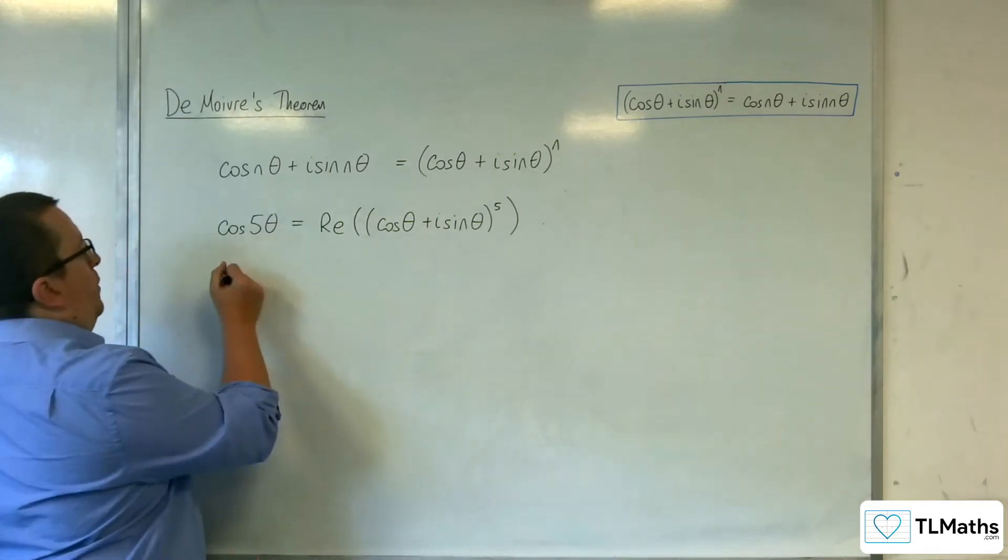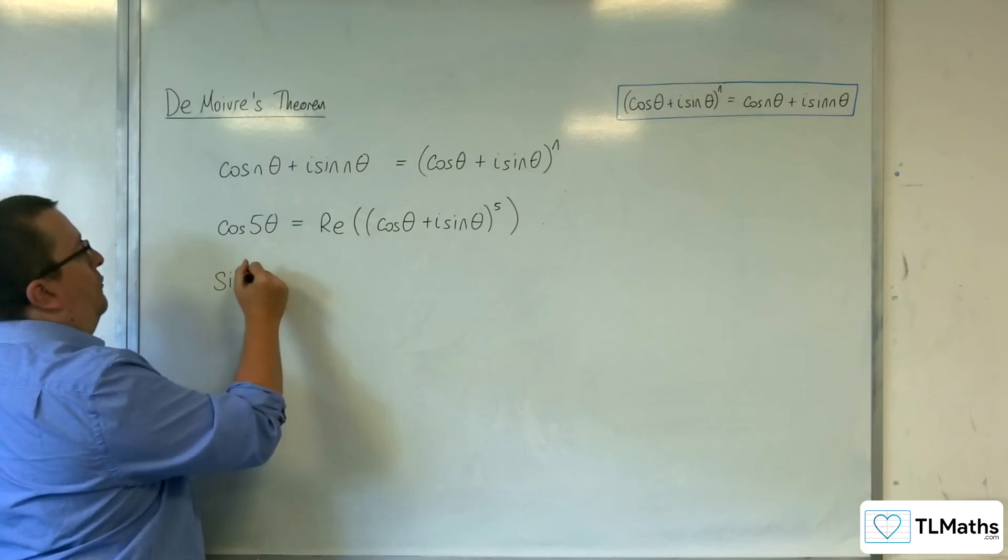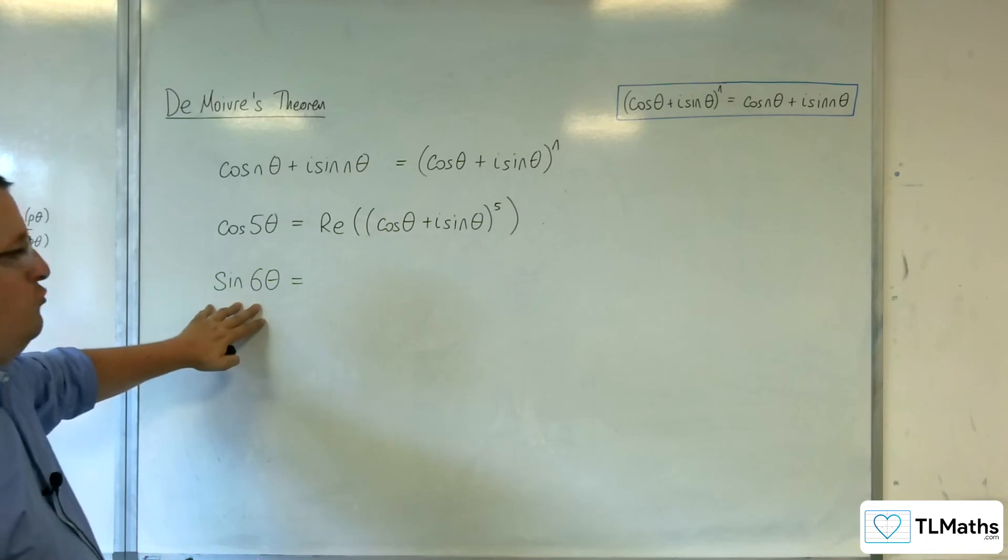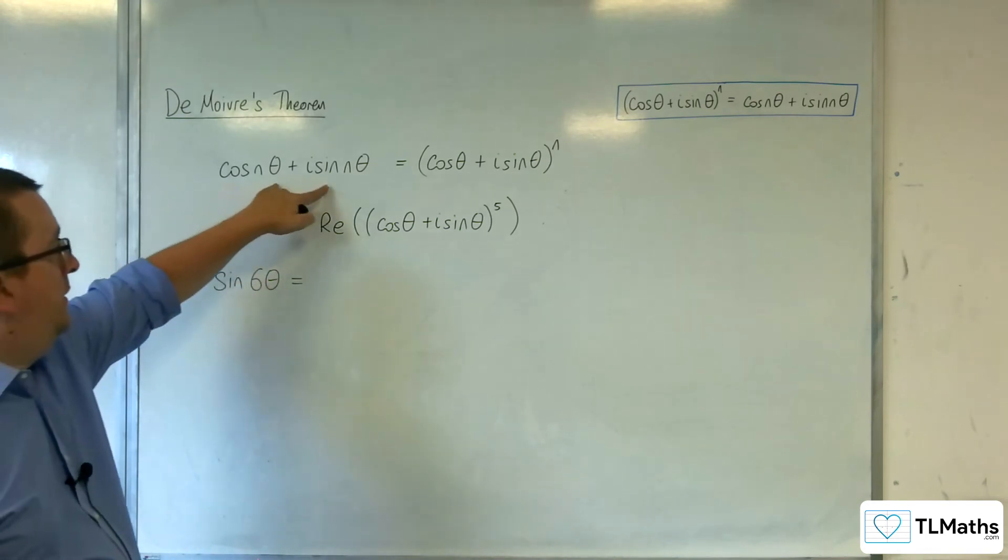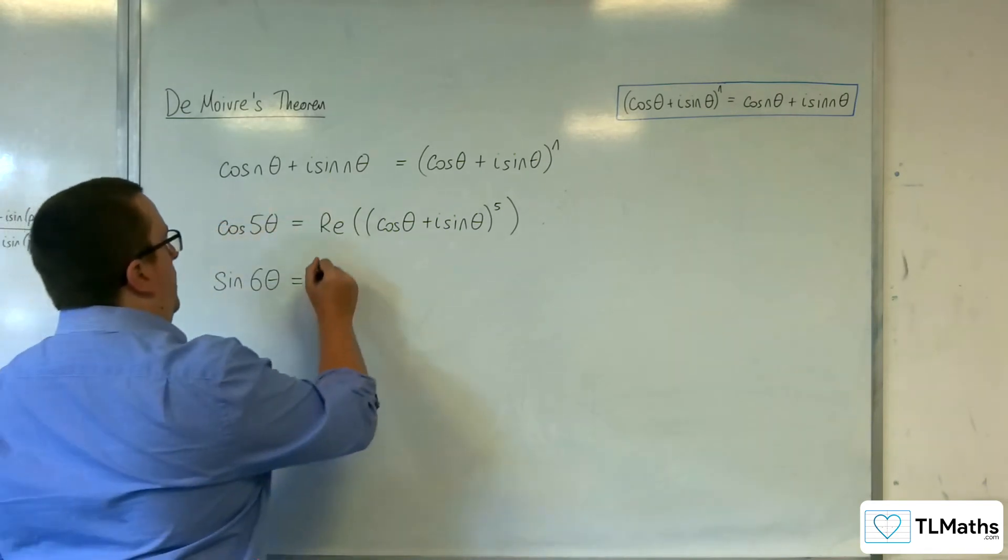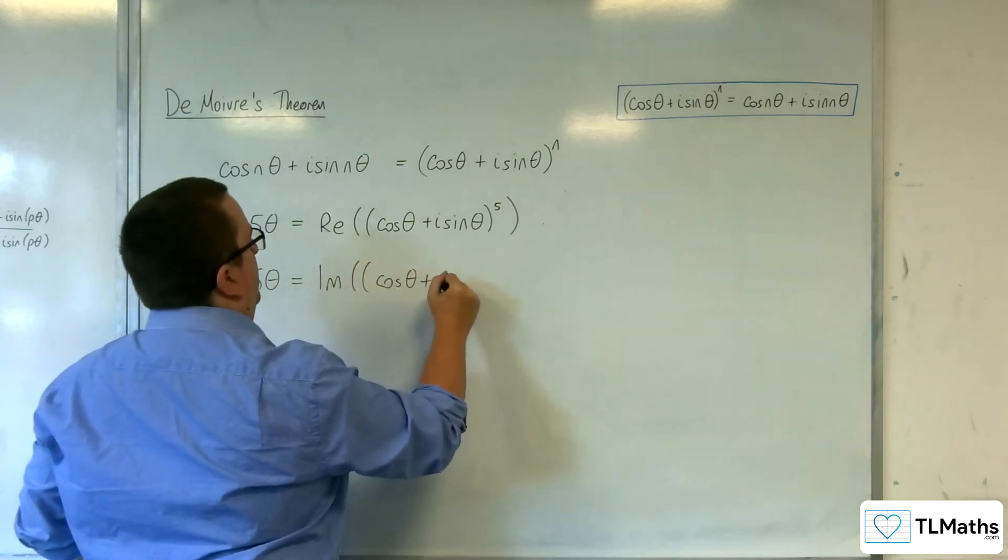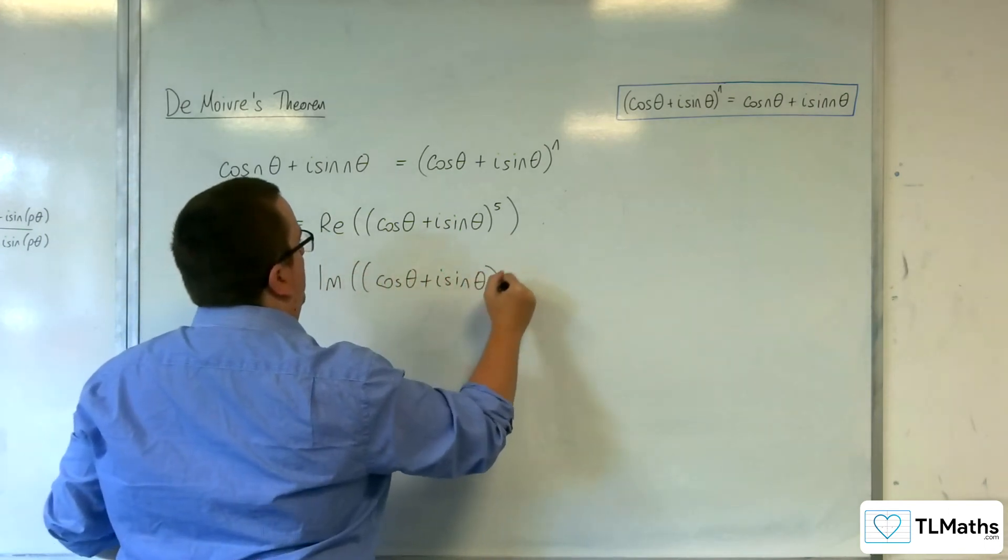Likewise, if I wanted to work out sine of 6 theta, then that is the imaginary part of the left-hand side of this. And so, I could work out the imaginary part of cosine theta plus i sine theta to the 6.